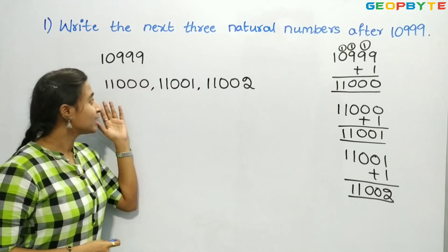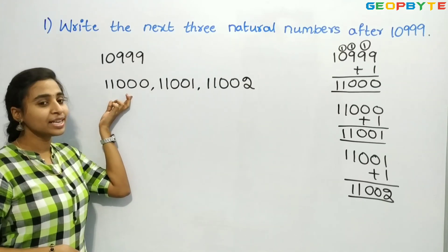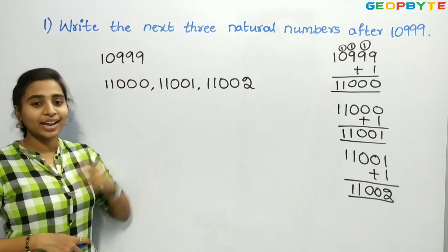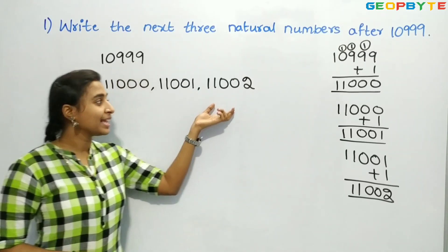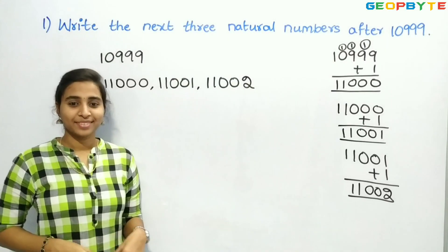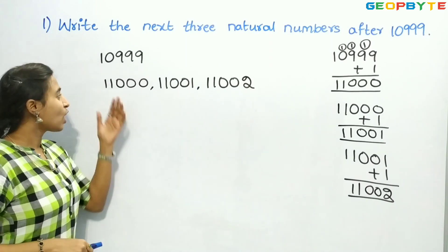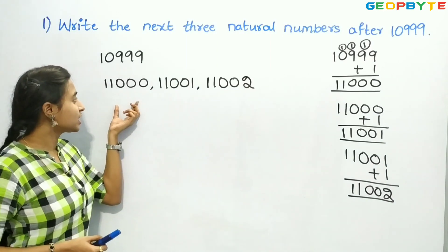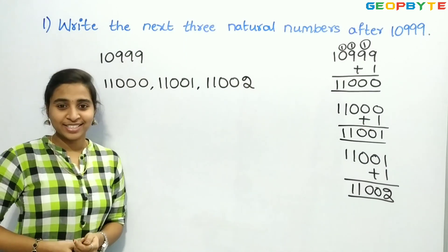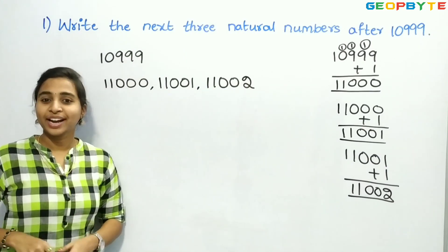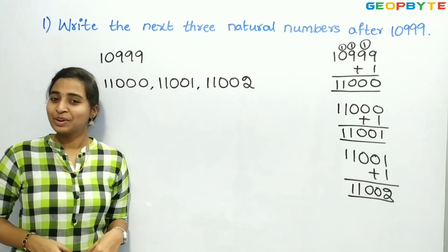If you see clearly, these 3 numbers are successors of each number. 11,000 is the successor of 10,999. 11,001 is the successor of 11,000. 11,002 is the successor of 11,001. Also, 10,999 is the predecessor of 11,000, and 11,001 is the predecessor of 11,002. If we keep adding 1 we get successors; if we subtract 1 we get predecessors.